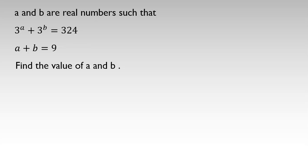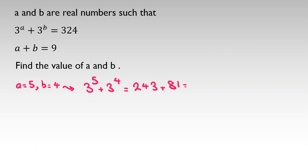If you select a equal to 5 and b equal to 4, or vice versa a=4 and b=5, then 3 to the 5 plus 3 to the 4 equals 243 plus 81, which equals 324. So the first equation is satisfied, and a plus b equals 5 plus 4 which equals 9, so the second equation is also satisfied.